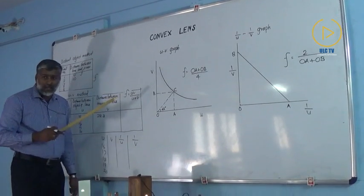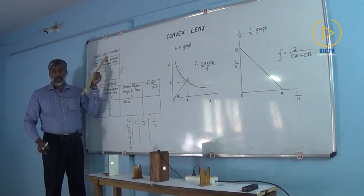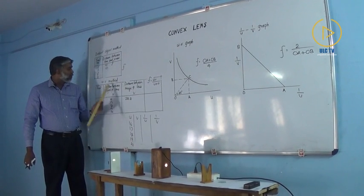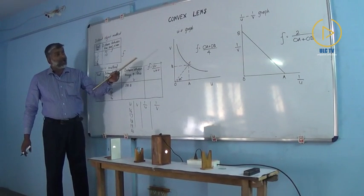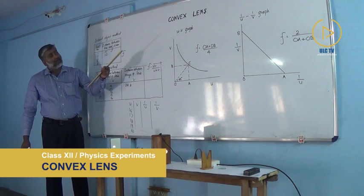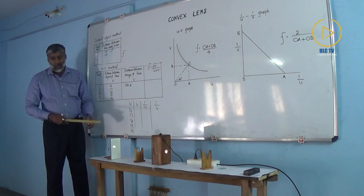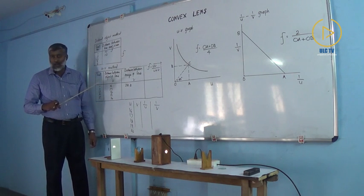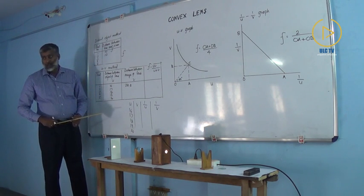So we followed four methods. In the first, the distant object method, I got the rough value of focal length as 10 centimeter. In the next, the UV method, the value is also 10. In the third, the UV graph, I got the value as 10. In the fourth method, the 1/U vs 1/V graph, I must also get 10. Because we are using the same lens, we must get the same value in all four methods, and the average value of focal length will be nearly 10 centimeter.